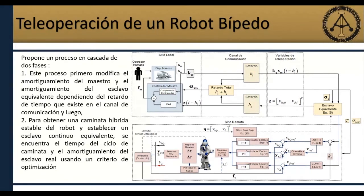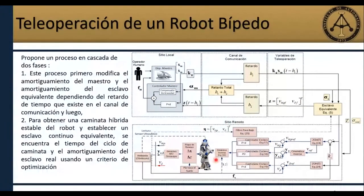Cuando se haya calibrado esto y comprobado que el error de coordinación se ha acotado, se pasa a la segunda fase en el sitio remoto, donde se va a calibrar el tiempo de ciclo de caminata y el damping real a partir de un criterio de optimización. Esto se logra para que el robot humanoide pueda caminar establemente.